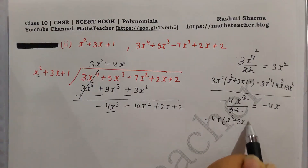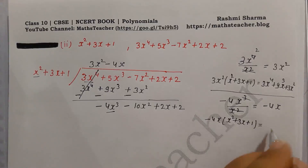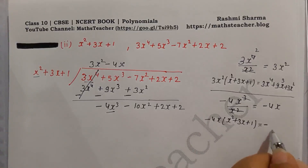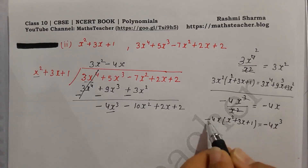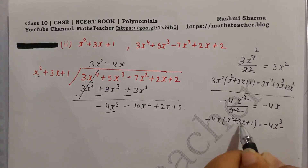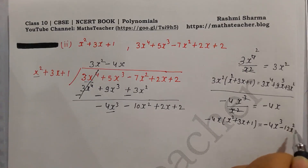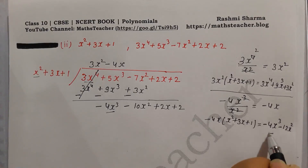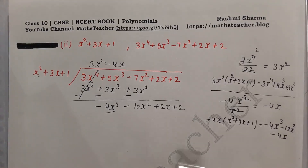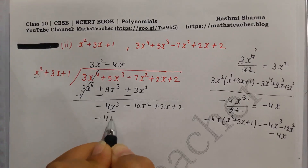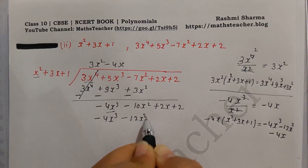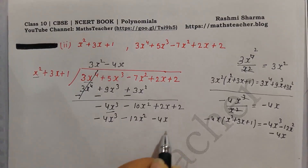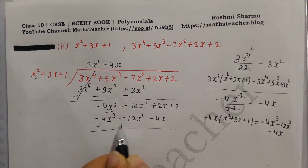We multiply minus 4x by the divisor x² plus 3x plus 1, applying the negative sign: minus 4x times x² gives minus 4x³, minus 4x times 3 gives minus 12x², minus 4x times 1 gives minus 4x. So we write minus 4x³ minus 12x² minus 4x, then change signs.